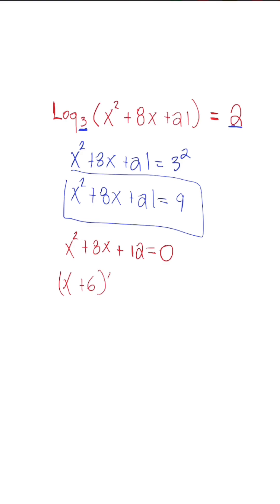we could have x plus 6 times x plus 2 is equal to 0. And once we set these factors equal to 0, these are the two answers that we're going to get, and we just need to determine whether they're extraneous solutions or not.